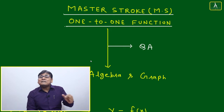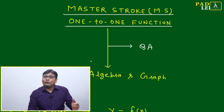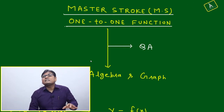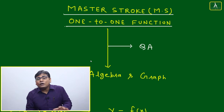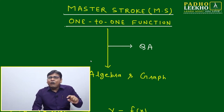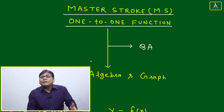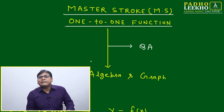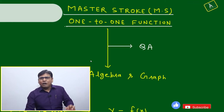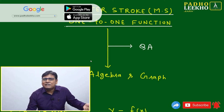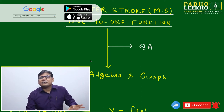Function is a special category of relation. Every function will be a relation, but every relation is not certain to be a function. All relations cannot be a function, but all functions must be a relation. In set theory terms, you can say a function is a subset of relation — out of all relations, only a few will behave as a function.